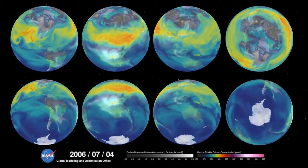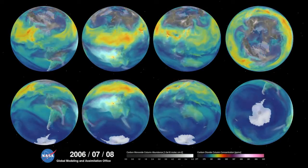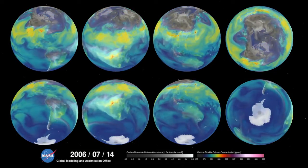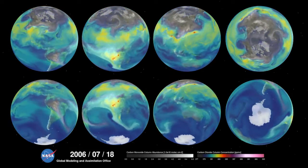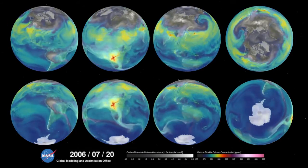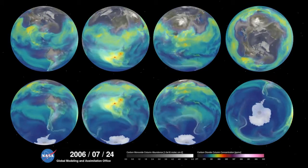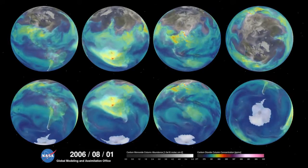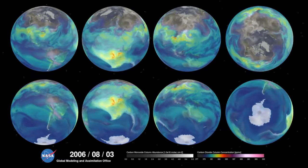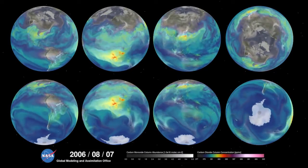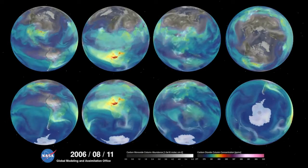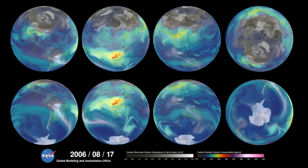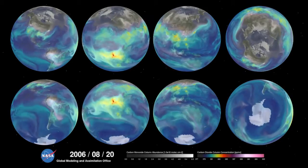Meanwhile, in the southern hemisphere, we see the release of another pollutant — carbon monoxide. This is a gas that's both harmful to the environment and to humans. During the summer months, plumes of carbon monoxide stream from fires in Africa, South America, and Australia, contributing to high concentrations in the atmosphere. Notice how these emissions are also transported by winds to other parts of the world.